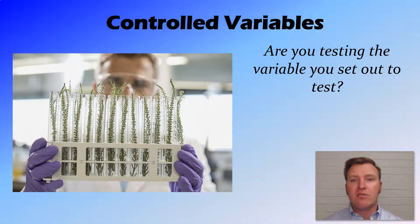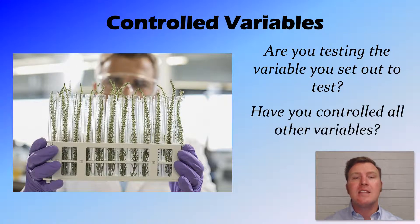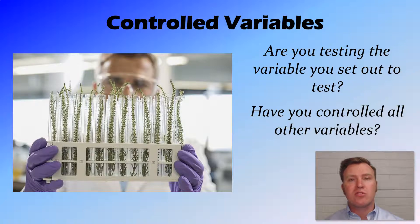So we need to ask ourselves, are we testing the variables we set out to test? And have we controlled all the other variables? So providing that we're testing those things that we want to test, and we've controlled the other things that we don't want to test, our experiment should be valid.